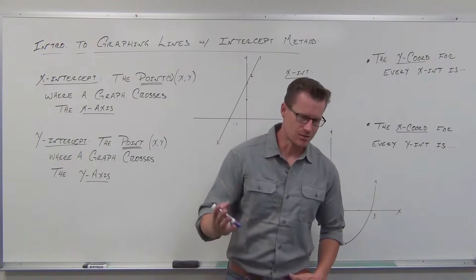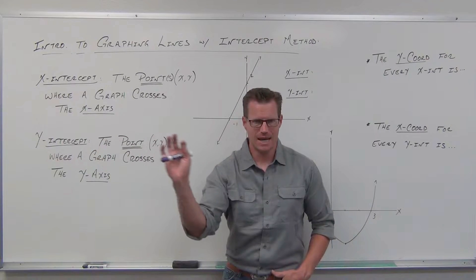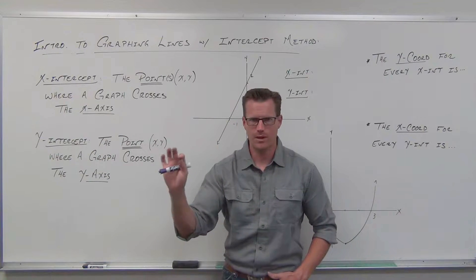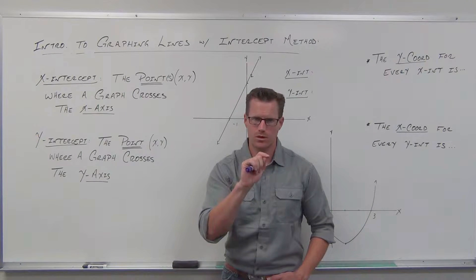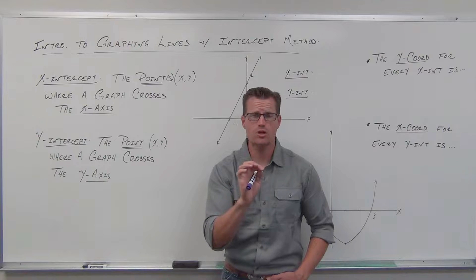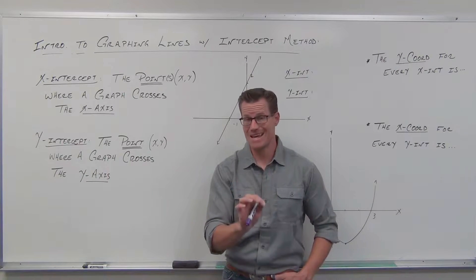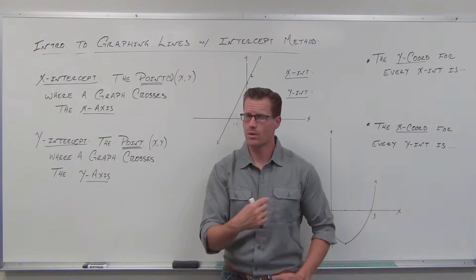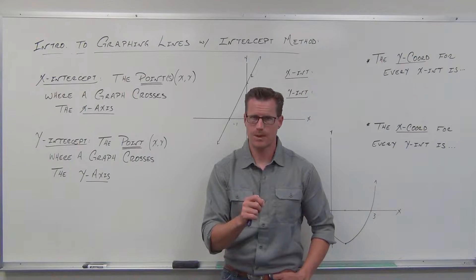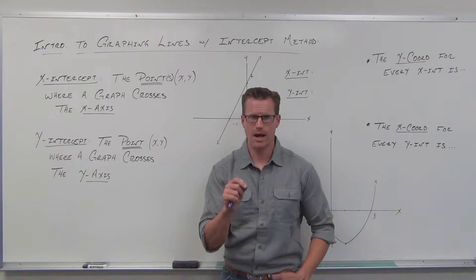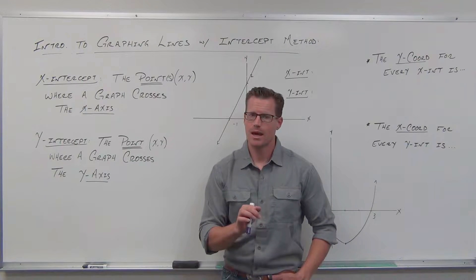What an x-intercept is — what that means — is the point on the x-axis where the line, or the curve, or the function, or whatever you're talking about, crosses the x-axis, if it crosses. There can be more than one; there can be none. So if there are points where the graph crosses the x-axis, we call those x-intercepts.